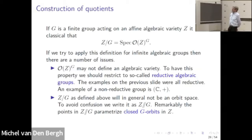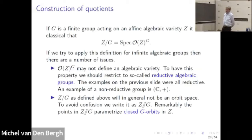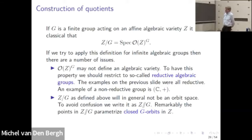Suppose G is reductive; we still have a problem. If we define Z//G using the invariant ring, we will not in general get an orbit space. So instead of a slash, we use a double slash to indicate it's not an orbit space, though we still think of it as a quotient. This quotient Z//G does not parametrize orbits but parametrizes closed orbits. What goes wrong is that if I have an algebraic group acting on a variety, there may be non-closed orbits. Since fibers need to be closed, non-closed orbits can never occur in an orbit space — that's why we have a problem.